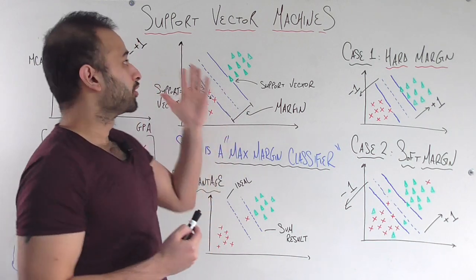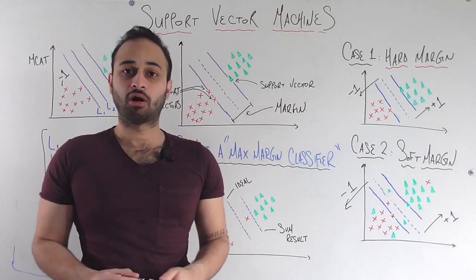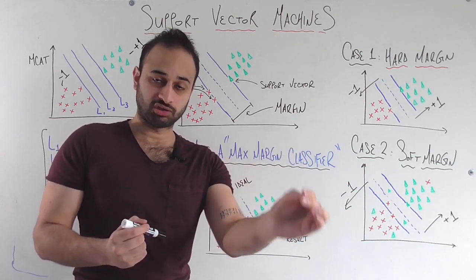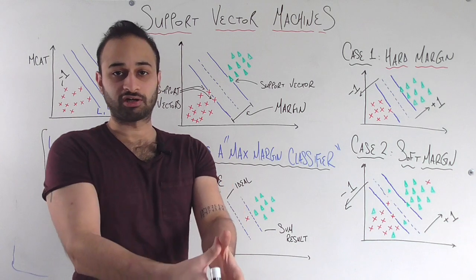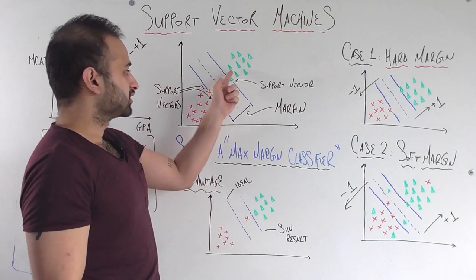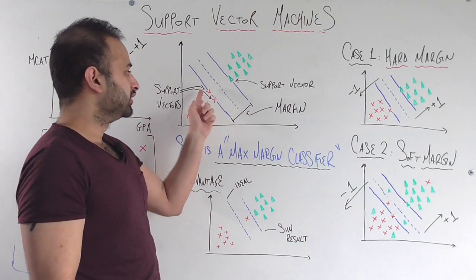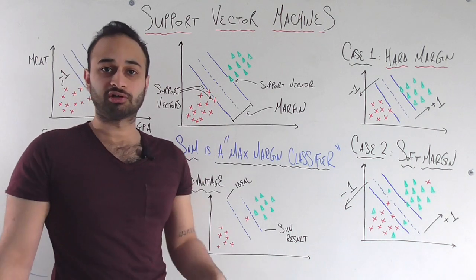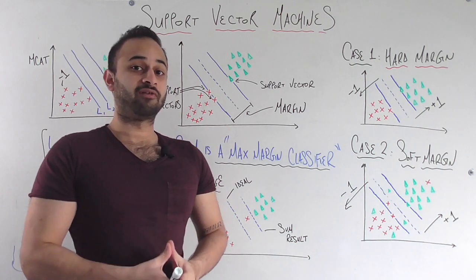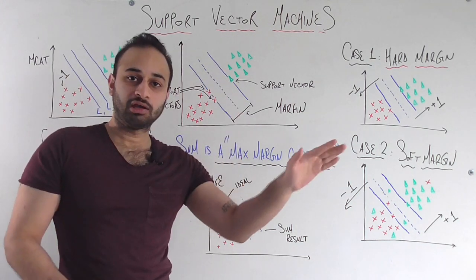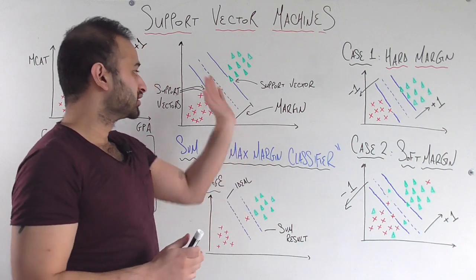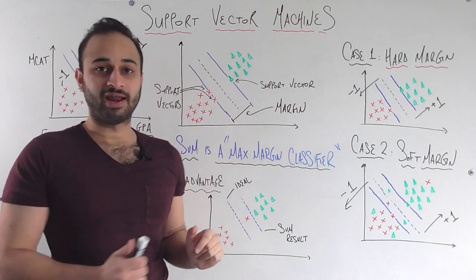And the last part of the story and where this name support vector comes from are that some of the observations in our training data get the special name of support vector. And I've labeled them here. This green triangle is a support vector and these two red X's are support vectors. What makes them so special? They are the ones who are fully defining this margin. So notice that this margin is kind of leaning or being supported by this green triangle and by these two red X's.